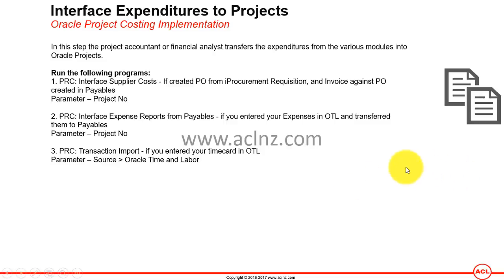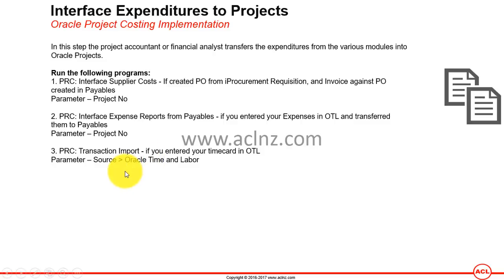To import them, we have to run certain programs. The first one is PRC Interface Cost, which is used to import supplier costs — if you created an iProcurement acquisition, used that to make a PO, and then paid the invoice of that PO in Payables, you run this program. The second program is PRC Interface Expense Report from Payables, for importing expense report data. The third is PRC Transaction Import, used for timecards that were approved and paid in Payables.